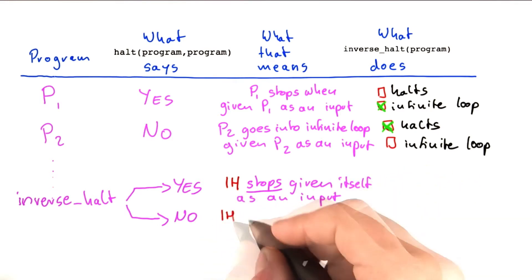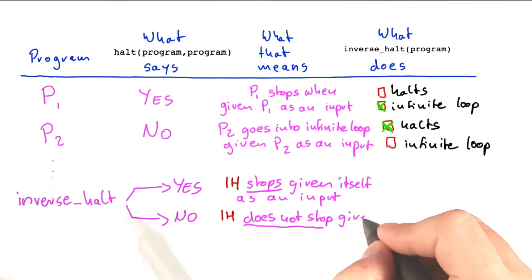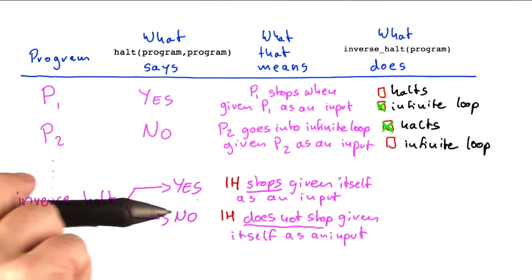And the other case, of course, would mean that inverse halt does not stop given itself as an input. So this is what happens if we read the table in this way.